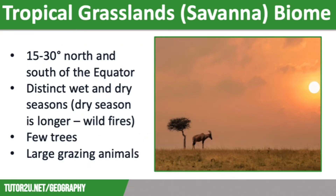We're going to talk about the tropical grasslands biome next, which is also known as the savannah. Savannah grasslands lie between 15 and 30 degrees north and south of the equator, between tropical rainforests and hot deserts. This biome has distinct wet and dry seasons due to the Hadley cell. The dry season is longer and it can be extremely hot with wildfires common, whereas the wet season can see torrential downpours and intense thunderstorms. Savannah grasslands are characterized by a few trees and are home to large grazing animals such as giraffes, elephants and zebras, along with predators such as lions and cheetahs.